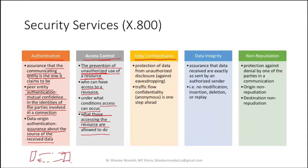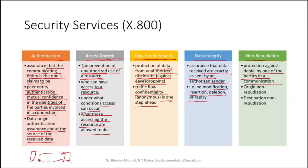Data confidentiality is protection of data from unauthorized disclosure — against eavesdropping. Traffic flow confidentiality is one step ahead of it. Then data integrity — assurance that data received are exactly as sent by an authorized sender, with no modification, insertion, deletion, or replay in between. Then non-repudiation — protection against denial by one of the parties in a communication. It can be divided into origin non-repudiation, where the sender cannot deny accountability, and destination non-repudiation, where the receiver cannot deny accountability.